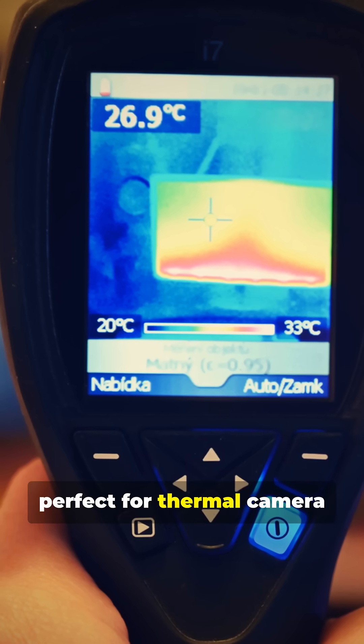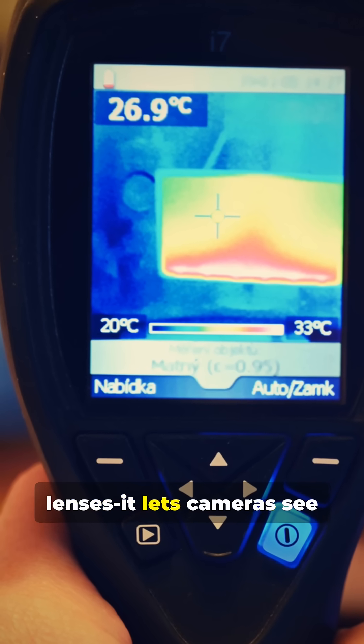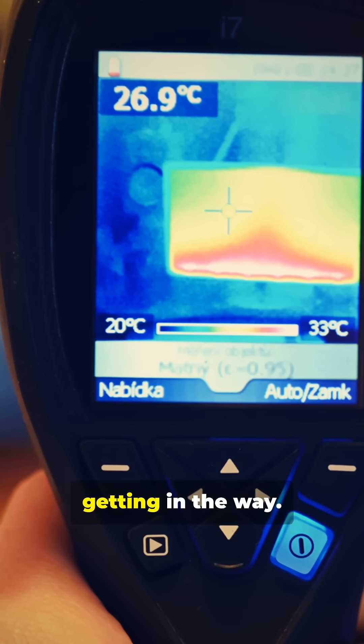That's why germanium is perfect for thermal camera lenses. It lets cameras see heat without normal light getting in the way.